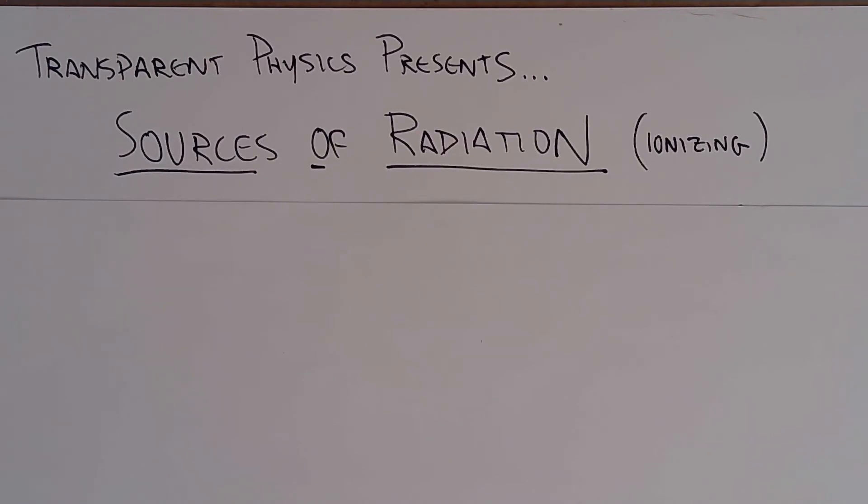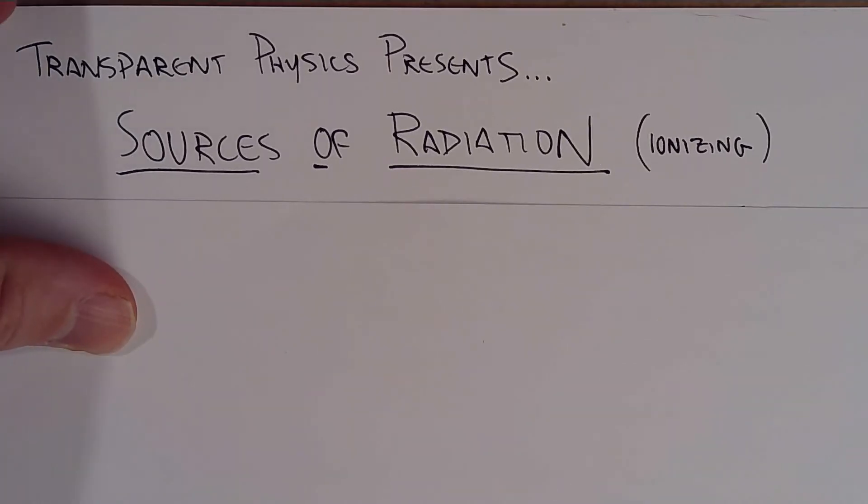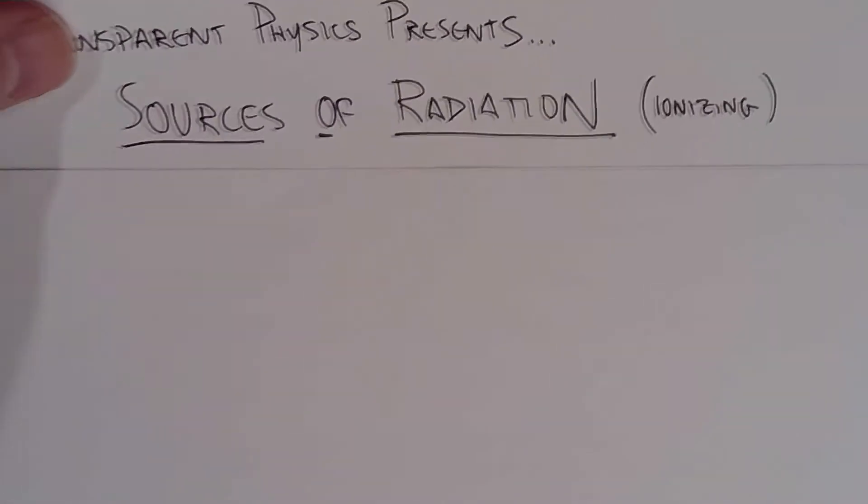Welcome to another lesson from Transparent Physics. In this lesson, we're going to be discussing sources of radiation, specifically ionizing radiation, which could be either nuclear or electromagnetic origins. We're also going to be throwing around some numbers a little bit later on.